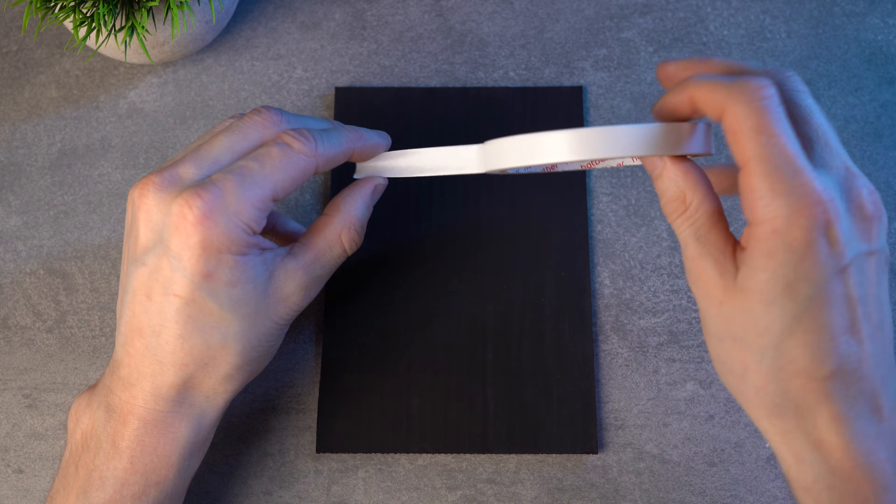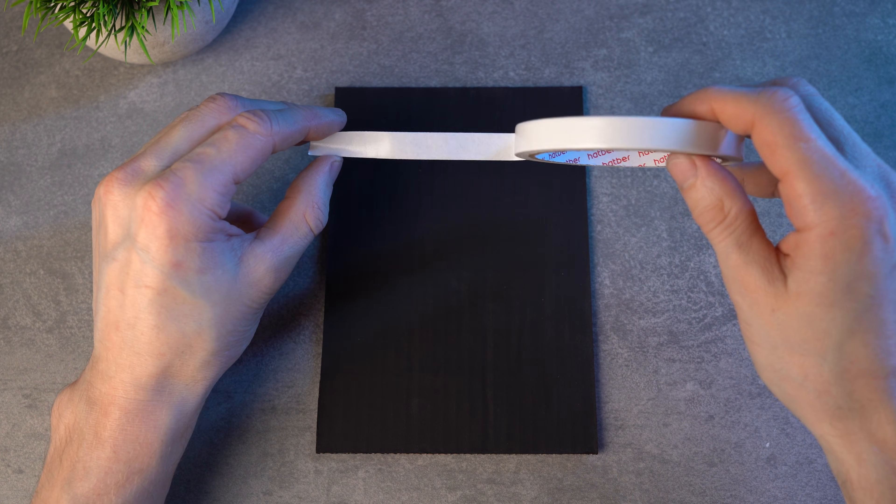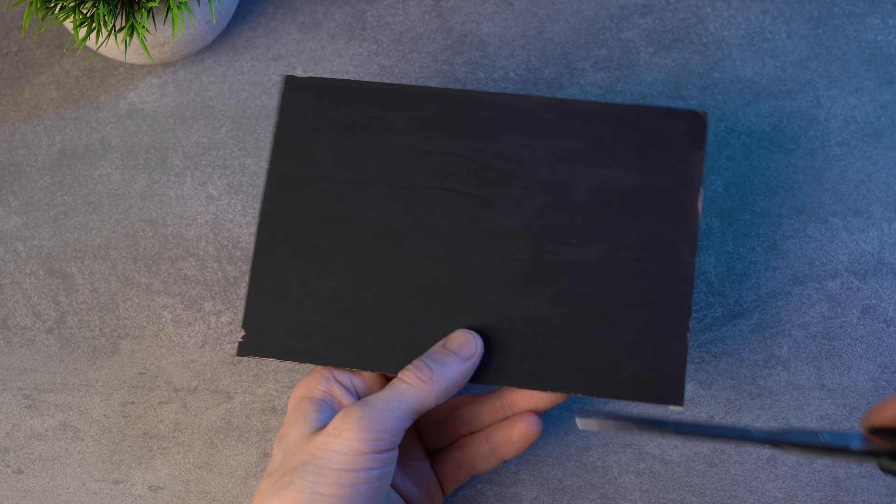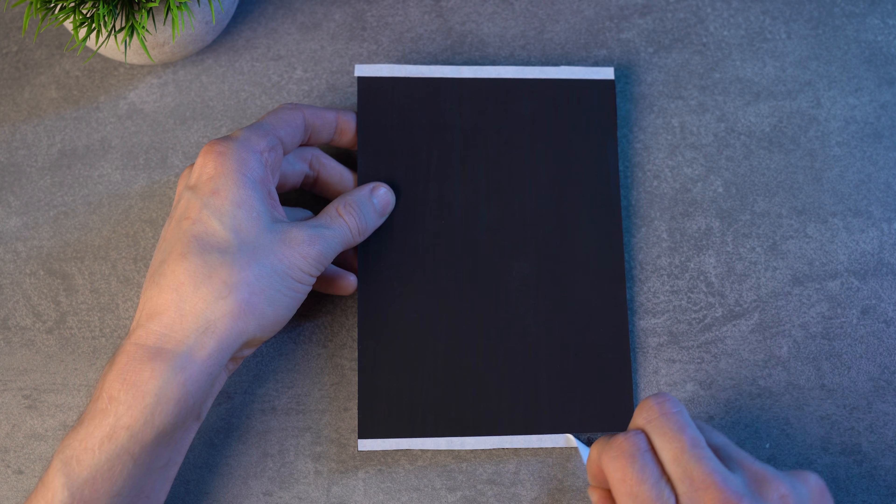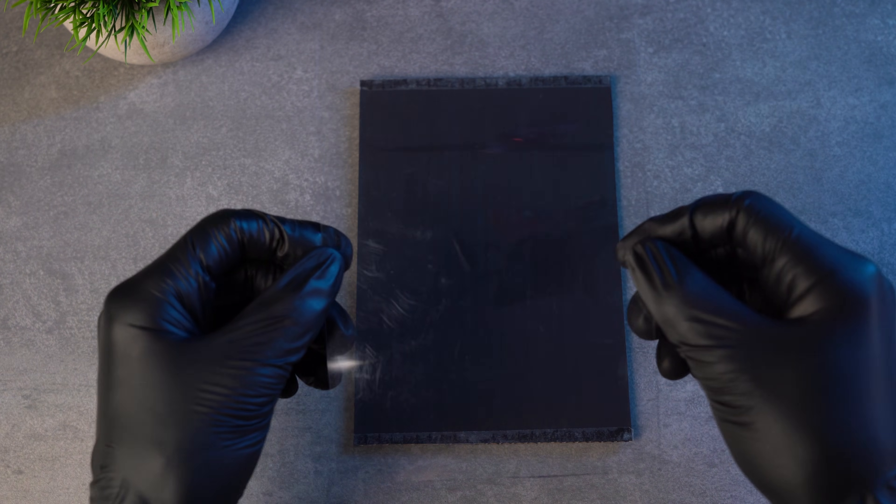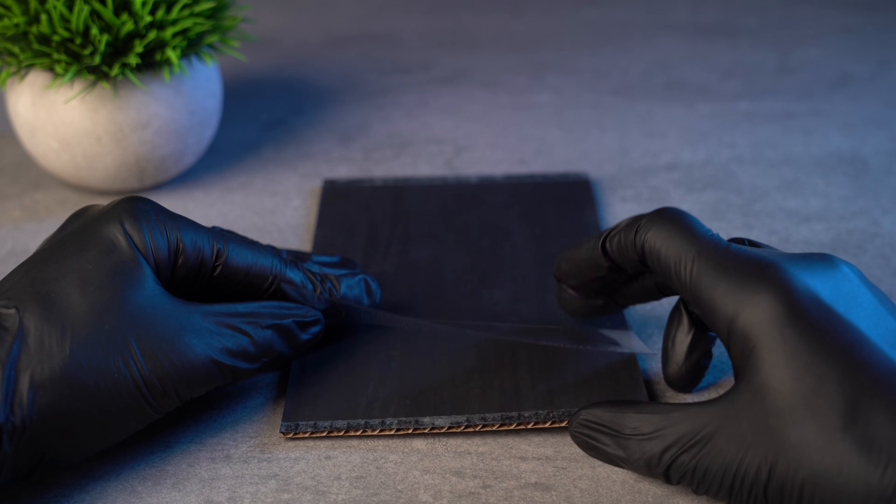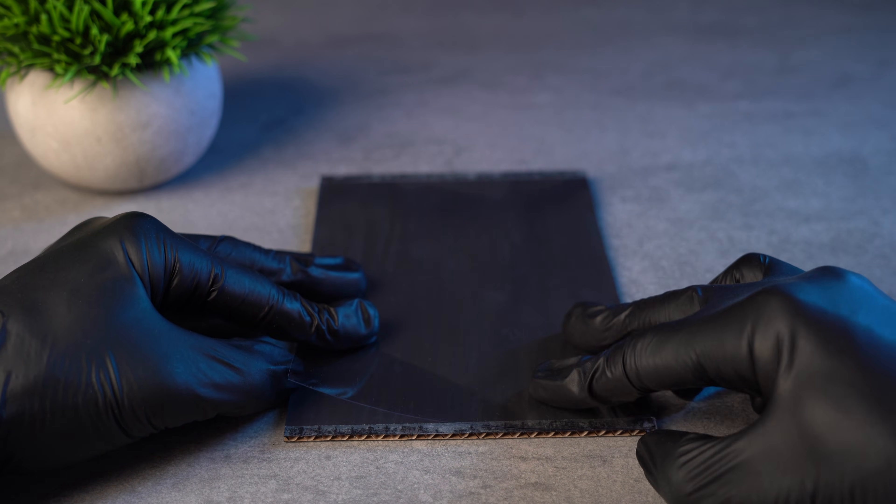Now let's attach the plastic to the cardboard. I'm using double-sided tape. I place two thin strips of tape along the edges and trim the excess. Then, I peel off the top layer. First, I stick the plastic down on one side. Then, gently pulling it tight, I attach the other side.